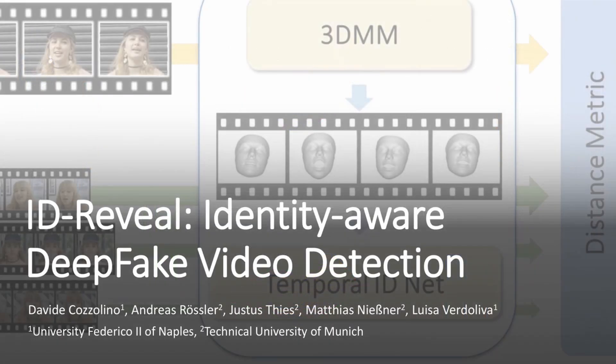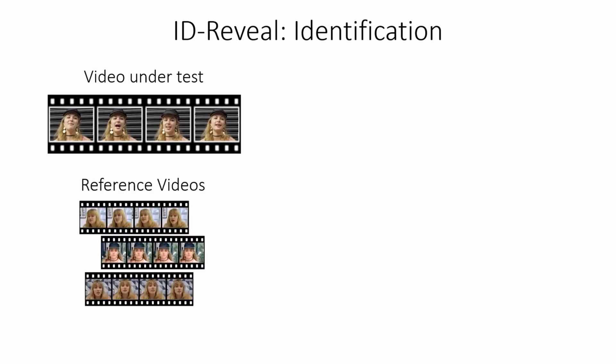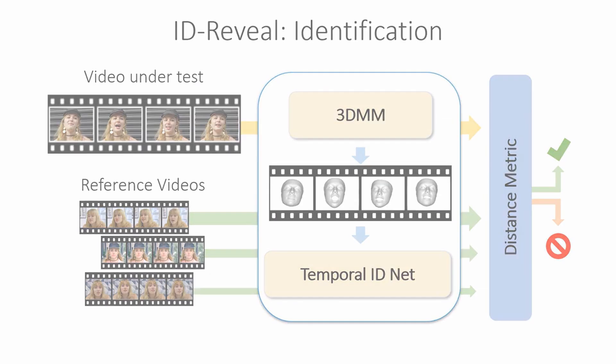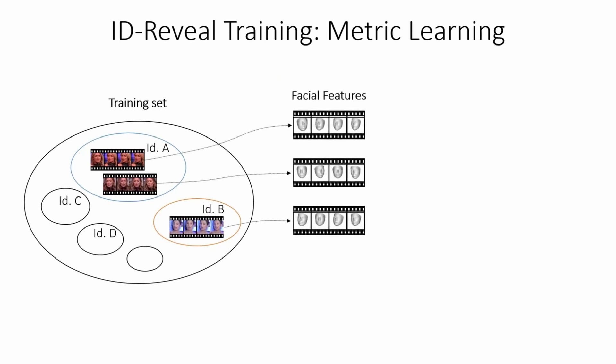We present ID-Reveal, an identity-aware deepfake video detection approach. We propose a method that does not directly detect whether a video is real or fake, but instead we ask the question whether this is actually the person who is claimed to be. We only need a set of pristine videos of the claimed identity. We compare the resulting feature embeddings in a learned feature space. This embedding space is trained only on pristine videos of many individuals, but it is not dependent on a specific manipulation method.